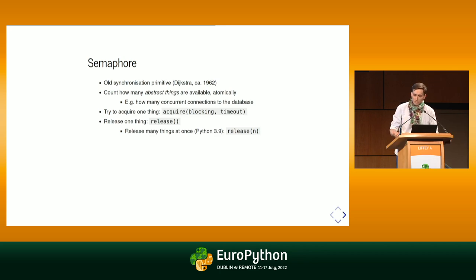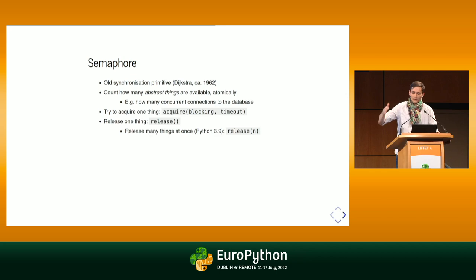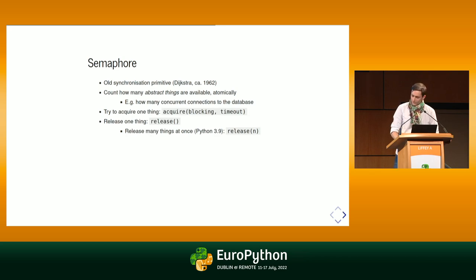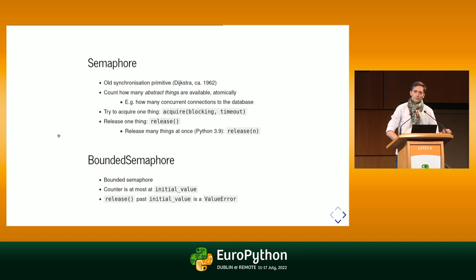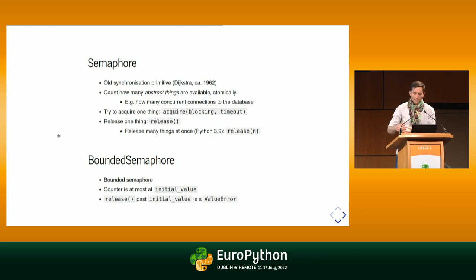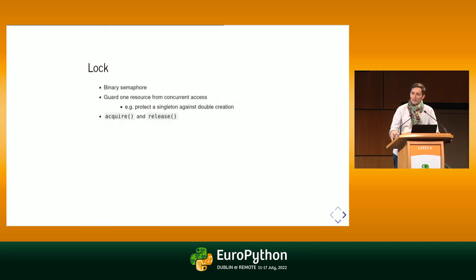We also have a related concept — the bounded semaphore — which is more for assertion and pre-bug purposes. It says you cannot go past a specific number of items in your pool, otherwise you get an error. That's more of a safety check. The lock is a very basic concept — it can be seen as a binary semaphore, so you just have either zero or one thing you can get in your pool. That basically gives you single access to a shared resource. It can also be called a mutex from mutual exclusion. A typical use case is protecting a singleton against double creation.